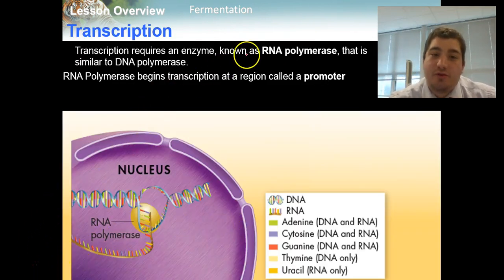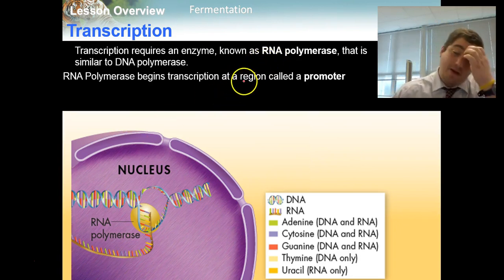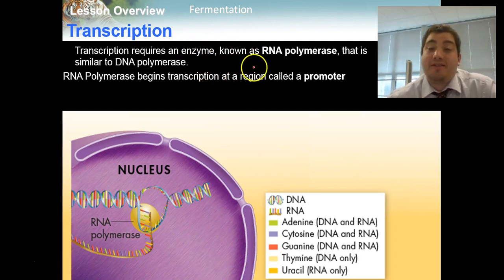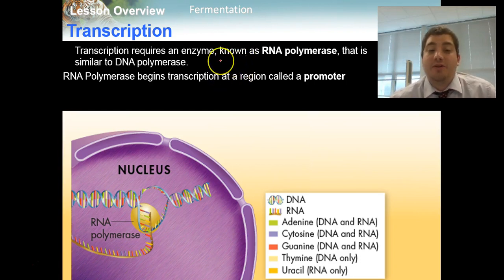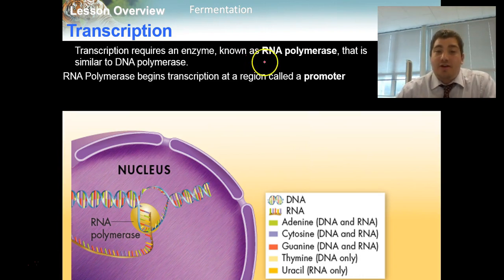So this begins the process of transcription — taking the DNA and transcribing it into RNA. If we think about when we talked about DNA replication, there were three enzymes, one of which was DNA polymerase, the enzyme that literally took nucleotides and built these long nucleic acids made up of A, T, C, and G, giving us a DNA code. We have a very similar one in transcription called RNA polymerase.